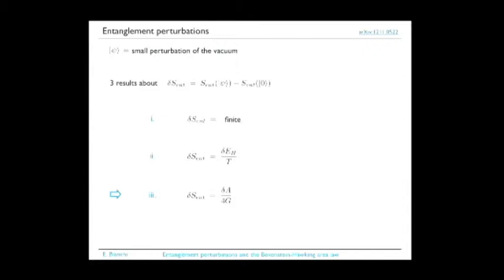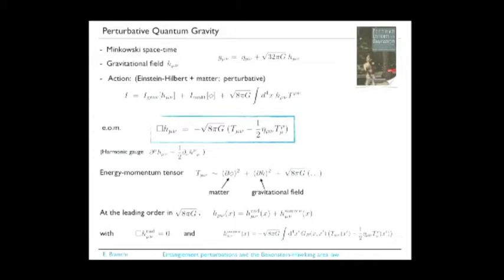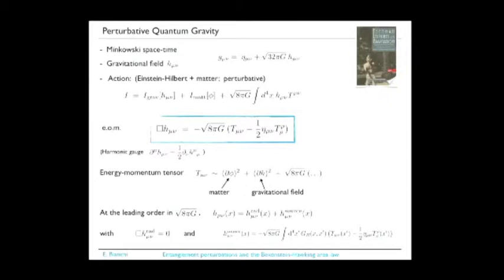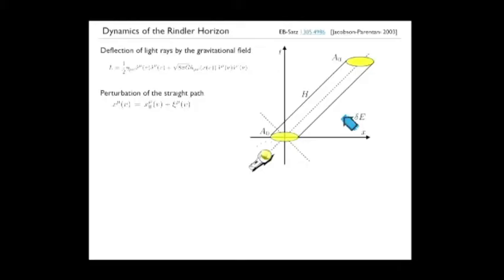Thermodynamics of entanglement—and up to this point there is no gravity yet. Now gravity comes in perturbatively: I consider the metric as a small perturbation on the flat metric, treating the gravitational field as a quantum field. It satisfies equations of motion that are the perturbative version of Einstein's equations. I'll use these equations of motion in a moment.